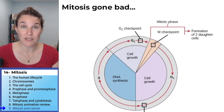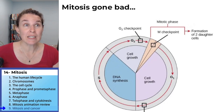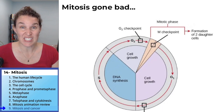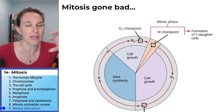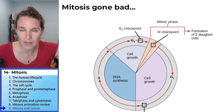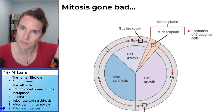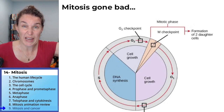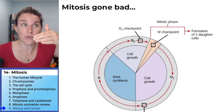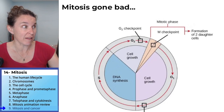Sometimes mitosis goes bad. A failure to grow — that's a thing, but that's not mitosis gone bad. When mitosis goes bad, it divides like mad.